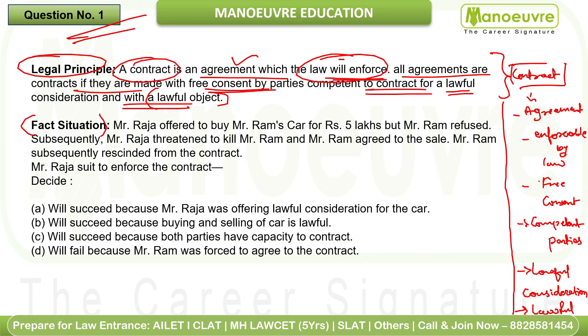Now the factual situation: Mr. Raja offered to buy Mr. Ram's car for five lakhs, but Mr. Ram refused. So Mr. Raja made an offer to Mr. Ram to buy his car for five lakhs, but Ram did not agree.